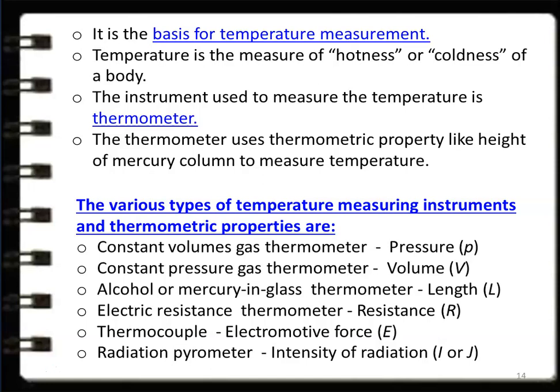Other temperature measuring instruments include the electrical resistance thermometer, which uses electrical resistance as the thermometric property, and the thermocouple, which uses electromotive force and works on the Seebeck effect. The radiation pyrometer is a non-contact type of temperature measuring instrument that determines temperature without touching the object, using intensity of radiation as the thermometric property.